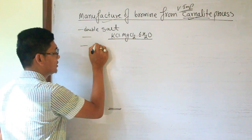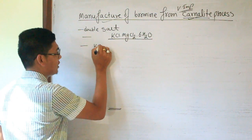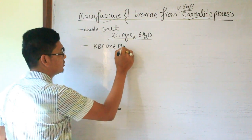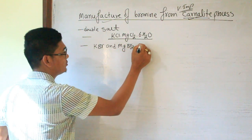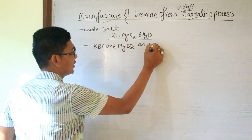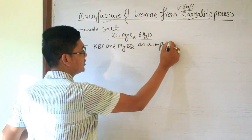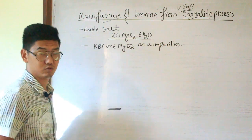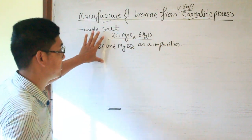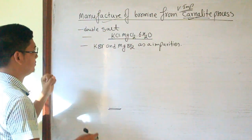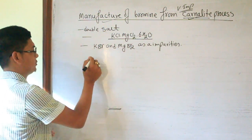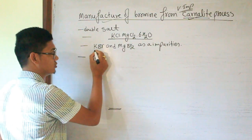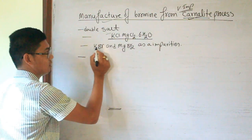Catalyte consists of KBr and MgBr₂ as impurities, that is potassium bromide and magnesium bromide.